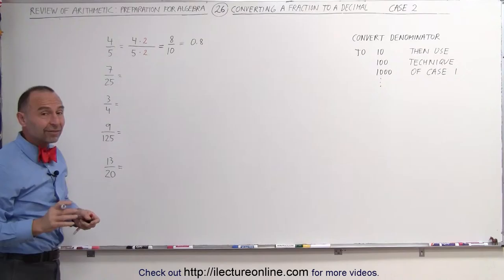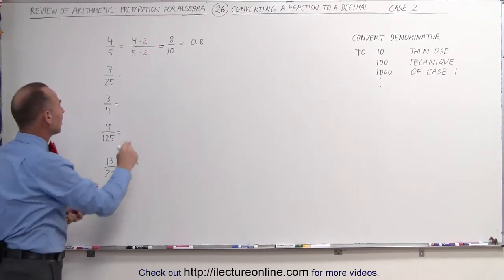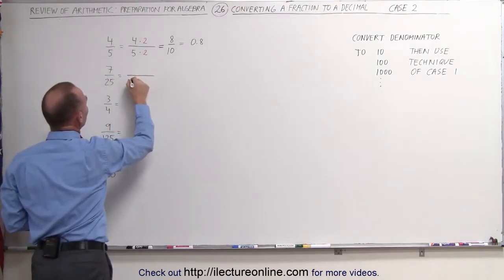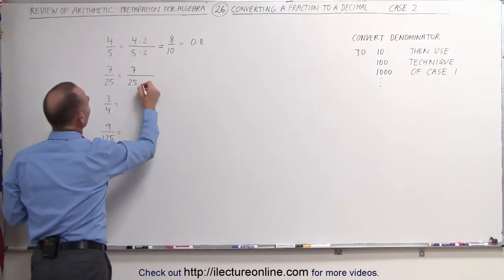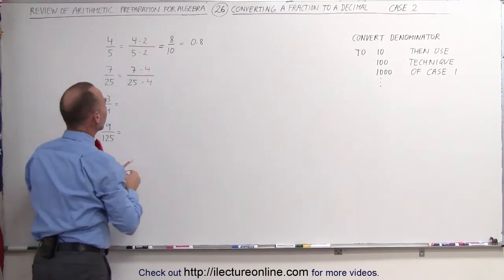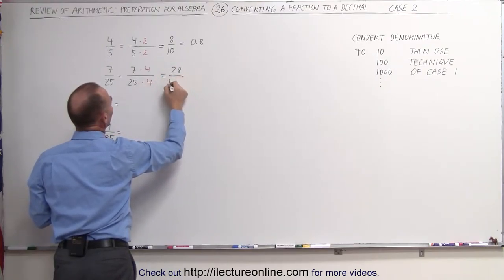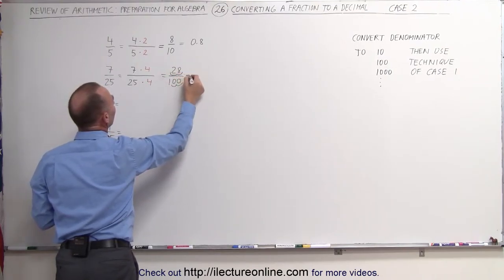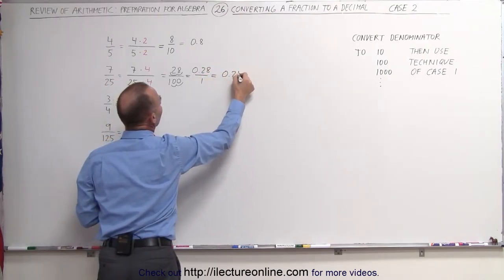In this example, we realize that 25 fits evenly into 100. What we need to do is multiply the denominator times 4 to make that 100, which means we must multiply the numerator times 4 as well. Multiply the denominator times 4, multiply the numerator times 4, and the numerator then becomes 4 times 7 is 28, and 4 times 25 is 100. We then move the decimal place over 2 spots, and this becomes 0.28.